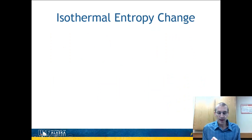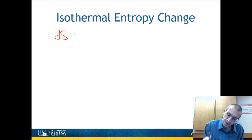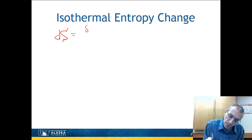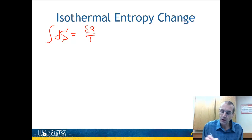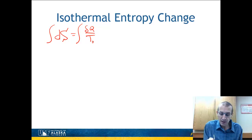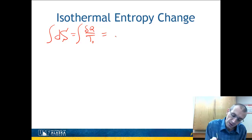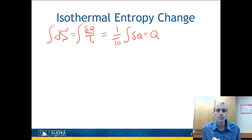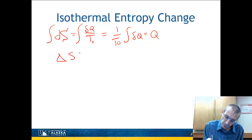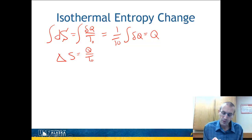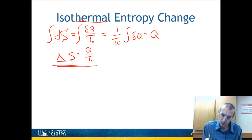Let's look at a special case: isothermal entropy change. We know dS equals δQ/T. Integrating gives the change in entropy ΔS. If T is constant at T₀, this becomes (1/T₀) times the integral of δQ, which is simply the total heat transfer Q. So ΔS equals Q/T₀ for an isothermal system — straightforward to calculate.